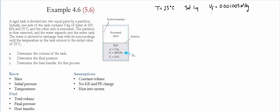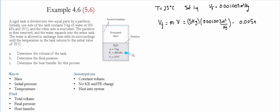Now that we have the value of the specific volume, we calculate the volume of the first half section. It's simply the mass times the specific volume: 5 kilograms multiplied by 0.001003 meter cubed per kilogram, which gives us 0.005 meter cubed. Since this is half of the volume, the entire volume is equal to 0.01 meter cubed.